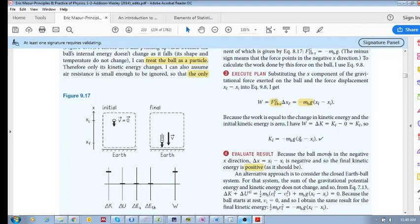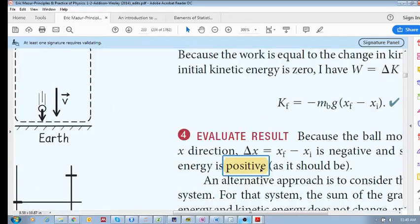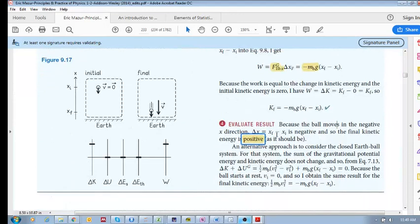So this has to be positive. How is it positive? If x final is smaller than x initial, which it is, right? x final is smaller than x initial, then this has to be negative. A negative times a negative gives me a positive kinetic energy.